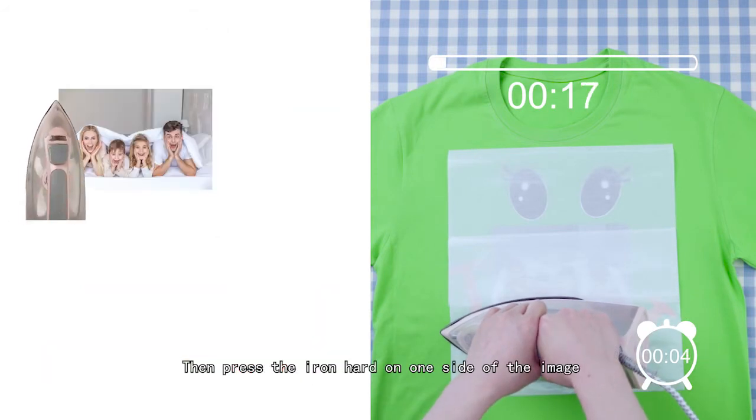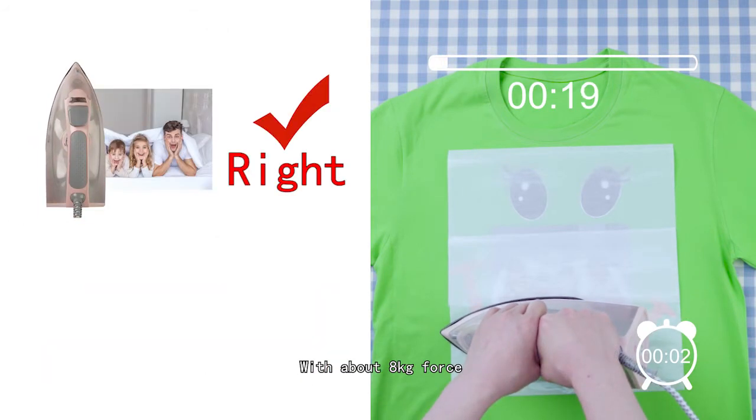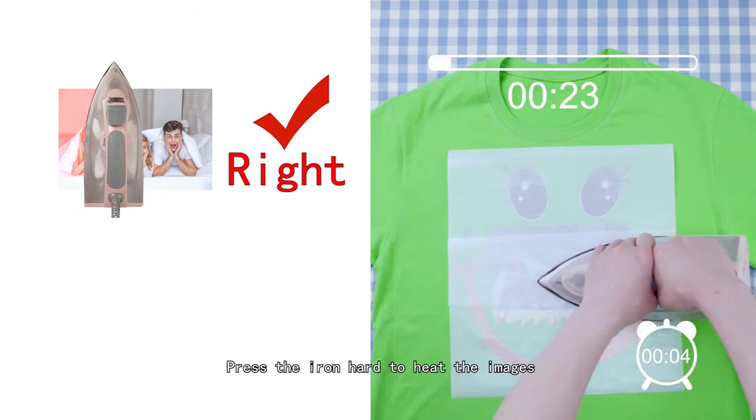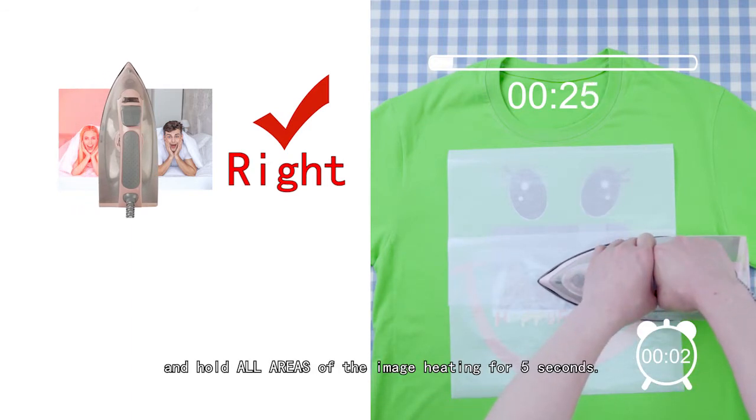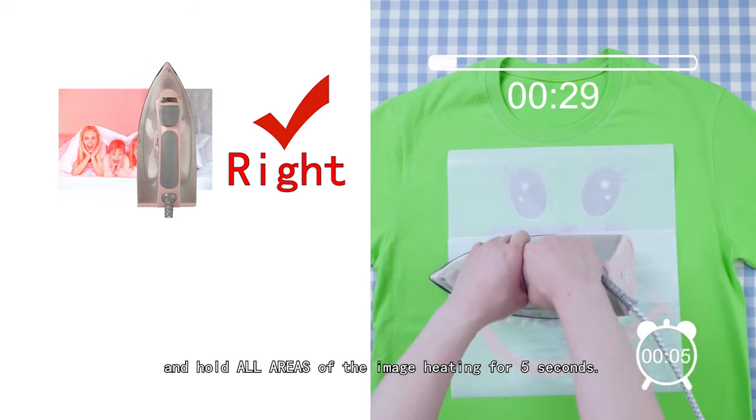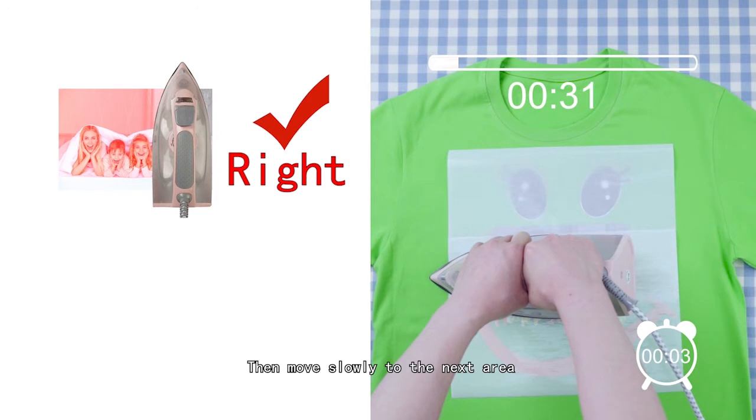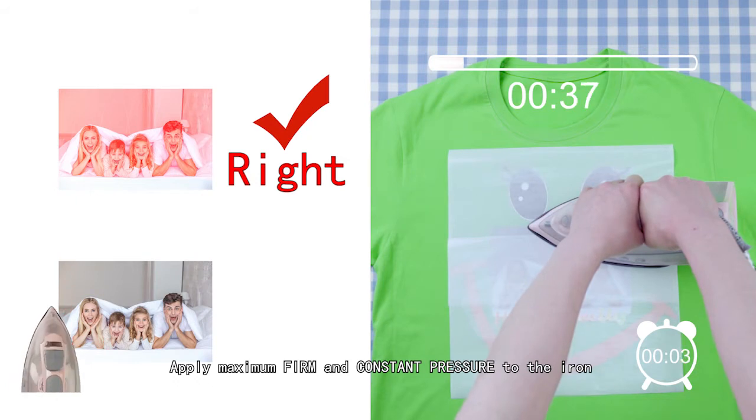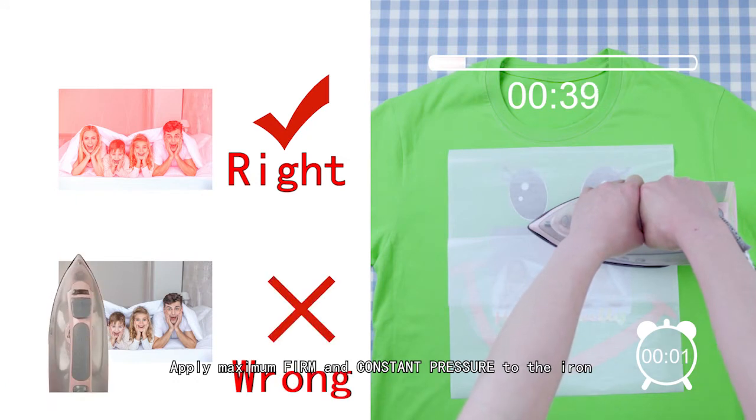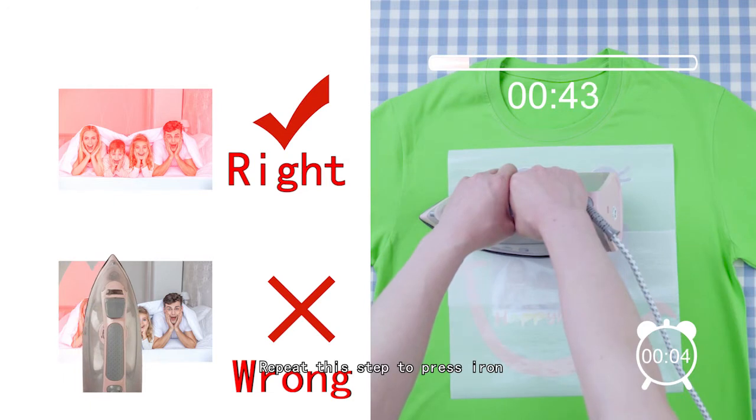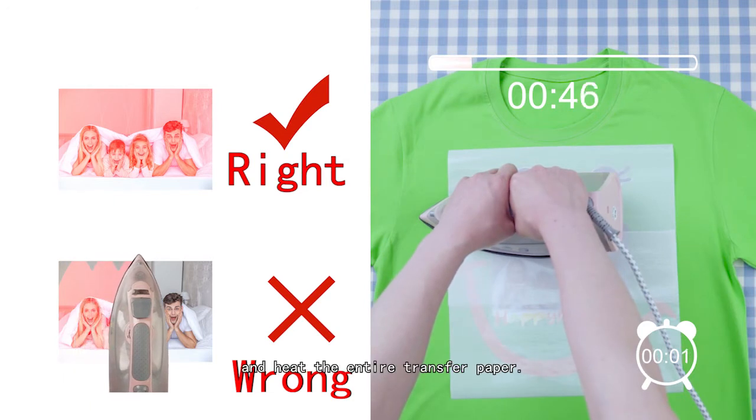Then press the iron hard on one side of the image with about 8 kg of force. Press the iron hard to heat the image and hold all areas of the image heating for 5 seconds. Then move slowly to the next area and continue to press hard to heat. Apply maximum firm and constant pressure to the iron. Repeat this step to press iron and heat the entire transfer paper.